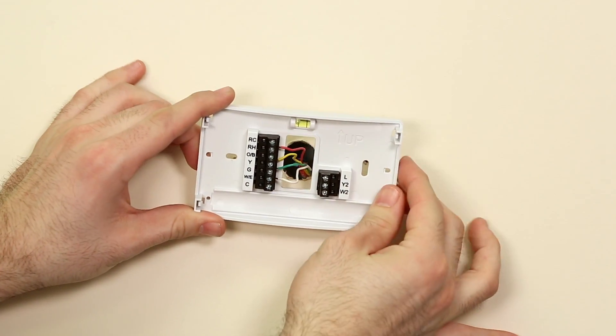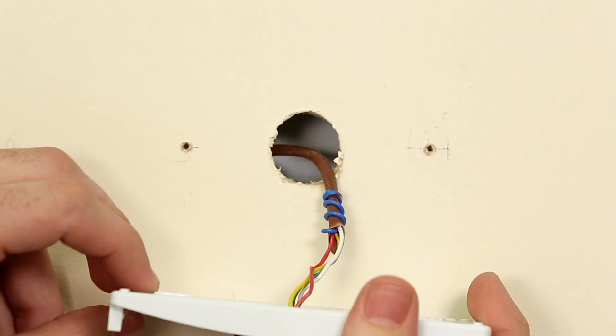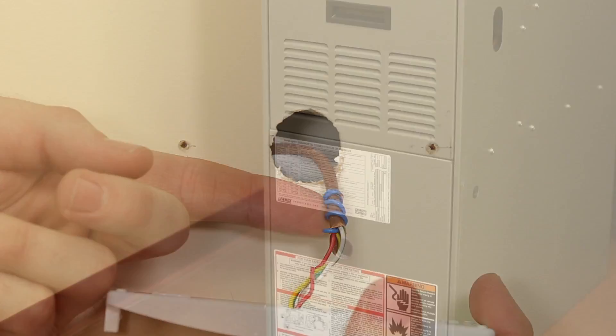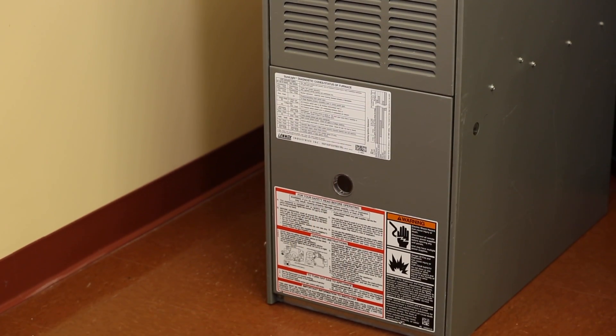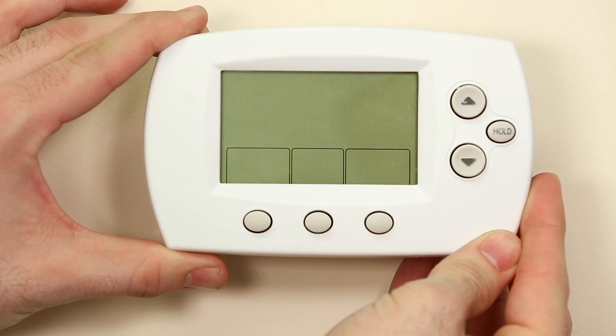There are two places to look for an unused wire: in the wall behind your thermostat base plate and in your furnace. Before you get into your furnace, let's take a look in the wall behind your thermostat.